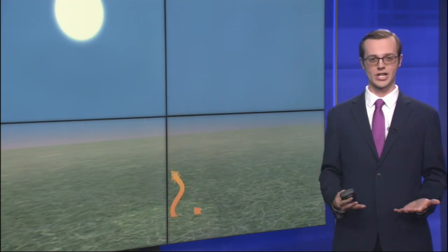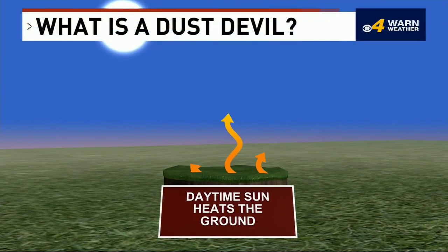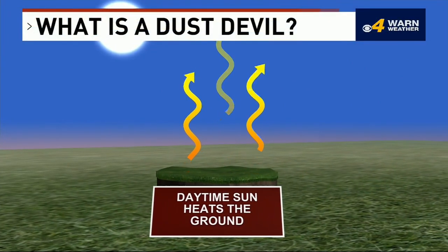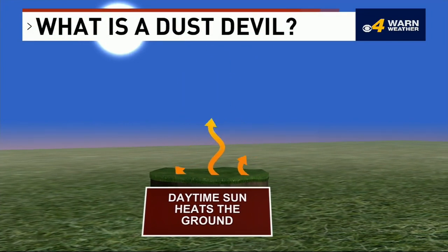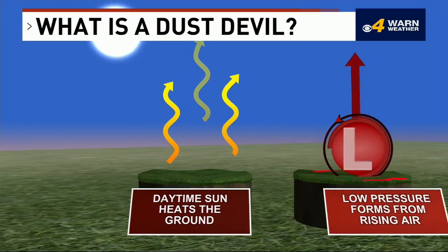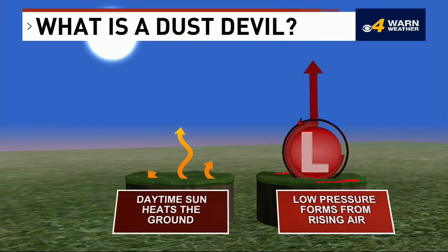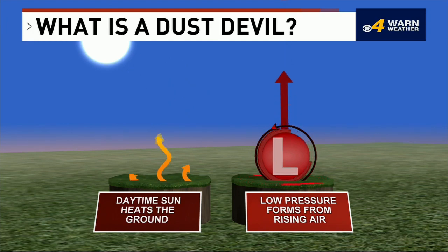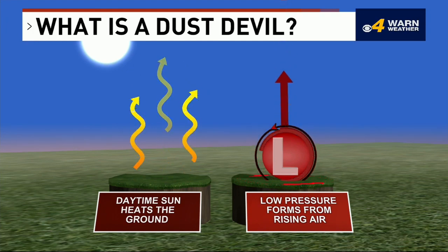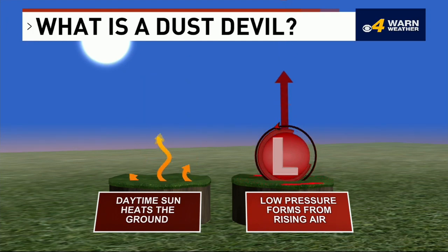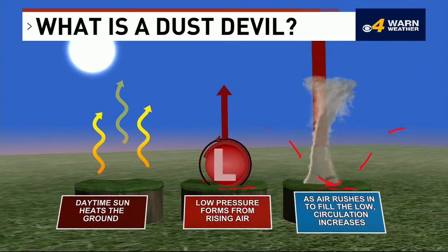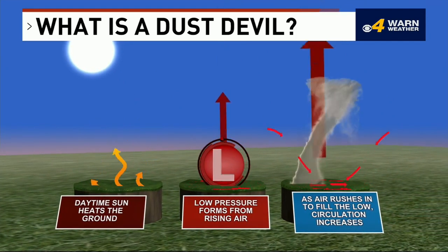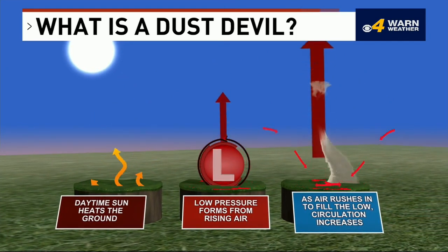As we all know, the sun is quite strong here in the borderland, so the daytime sun has no problem heating the ground very quickly. As the air near the ground heats up, hot air rises and forms low pressure at the surface, right at the ground. In order to replace this air that has risen, air must move into the area of low pressure, which is already circulating.